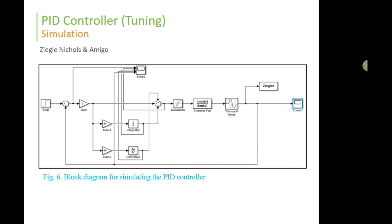This is the simulation part where we get the tuning values of the PID: KP, KI and KD, using two tuning methods: Ziegler-Nichols and Amigo.